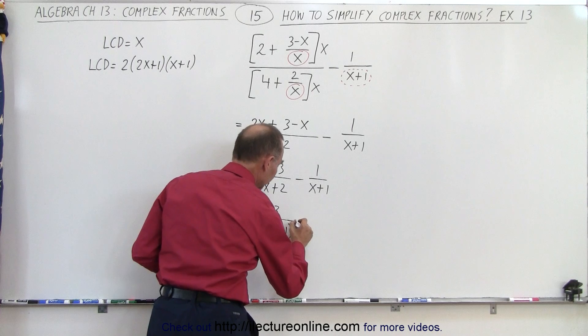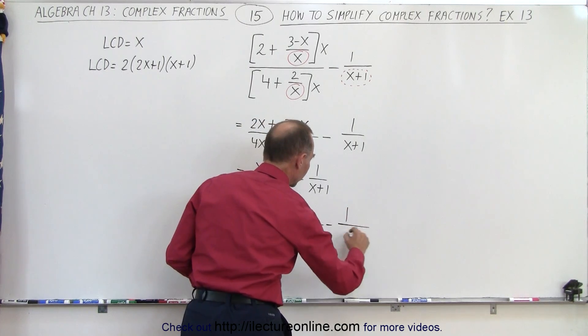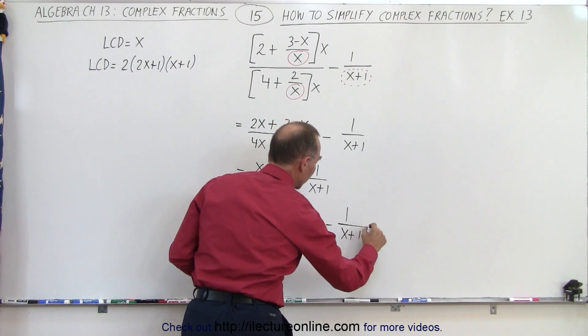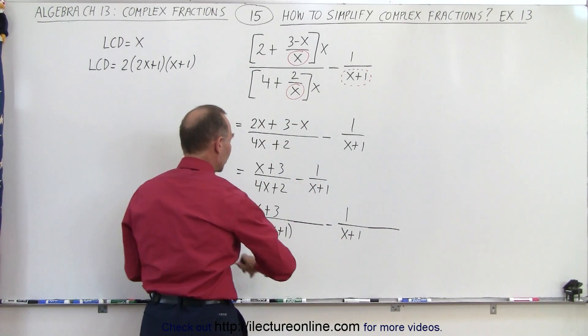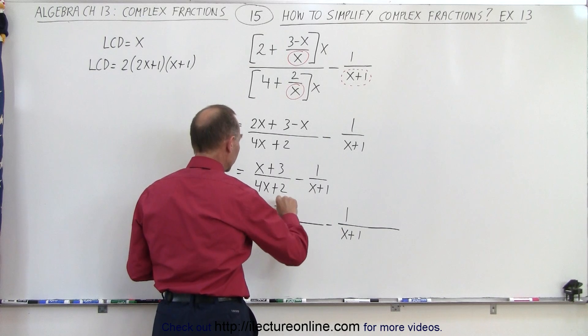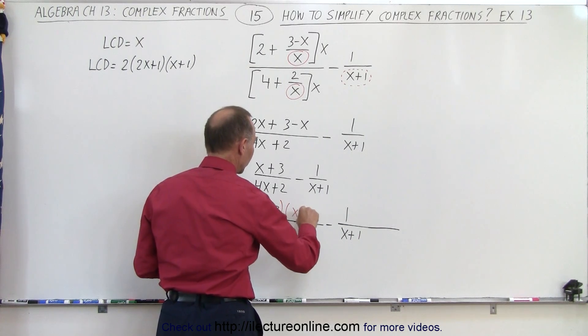Extend this line like this then minus 1 over x plus 1 and extend this a little bit more like this and now what's going to happen here is I'm going to multiply this numerator by x plus 1 and the same with the denominator times x plus 1.